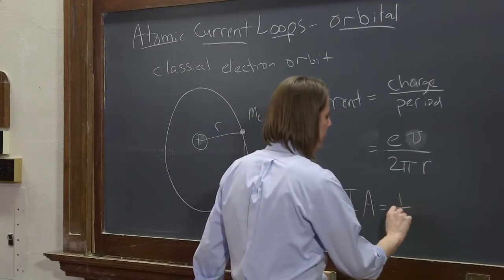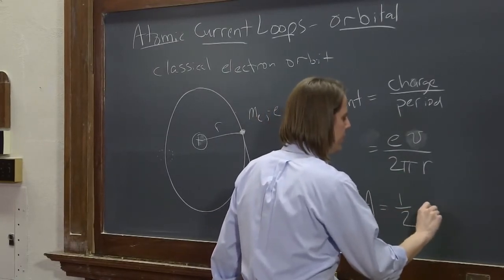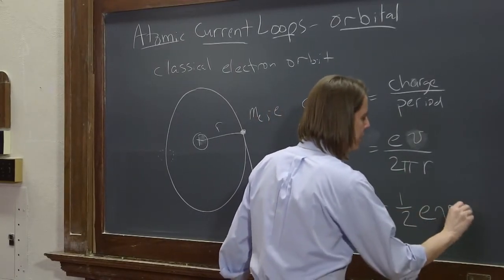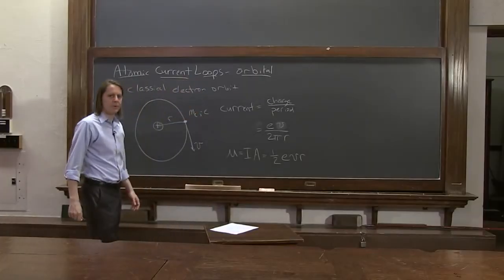then what do you get? You get 1 half e V R. So the magnetic moment of this little electron is 1 half times its charge, times its orbital velocity, times its radius.